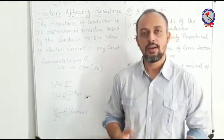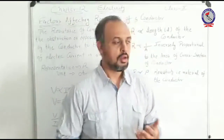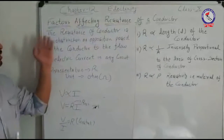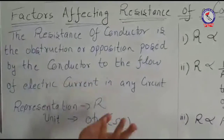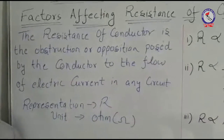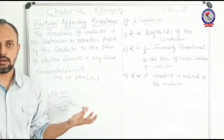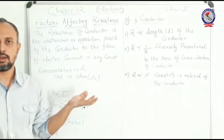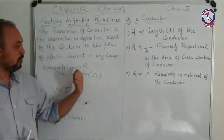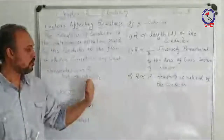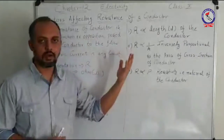So we will go through the concept of what factors affect or vary the resistance of a conductor. Resistance is actually the opposition created by the conductor. The resistance of a conductor is simply the opposition or obstruction posed by the conductor to the flow of electric current in any circuit. Resistance is important because it maintains the flow of current in any circuit. It is represented by capital R, the unit of resistance is ohm.